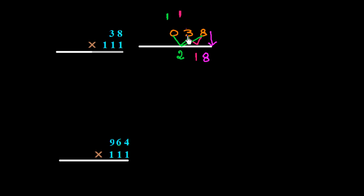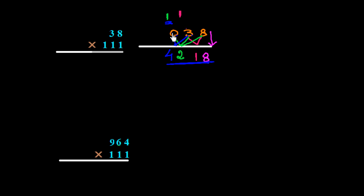Next, we add these two numbers: 3 plus 0 is 3, and we have a carry of 1, so it becomes 4. So the final answer is 4, 2, 1, 8. This is the result of 38 × 111.